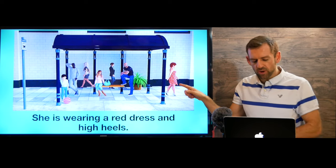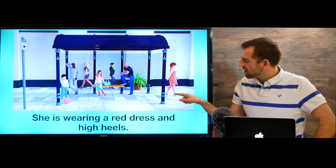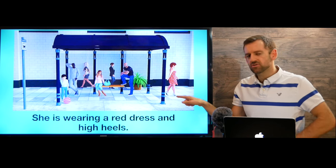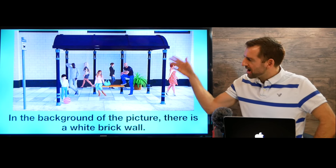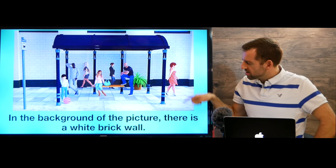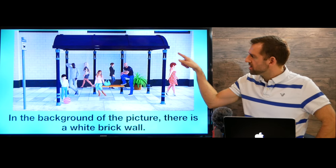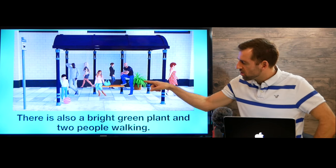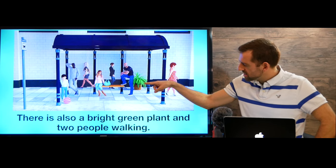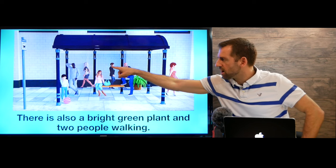This woman here — now what's she wearing? She is wearing a red dress and high heels. These kinds of shoes are called high heels. Now in the background of the picture, there is a white brick wall. Look at this — these things are called bricks. So there's a white brick wall, and there is also a bright green plant here, and two people walking.